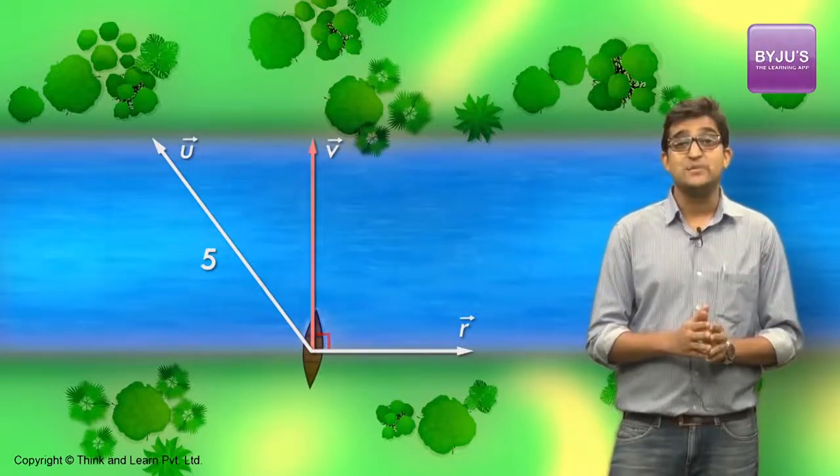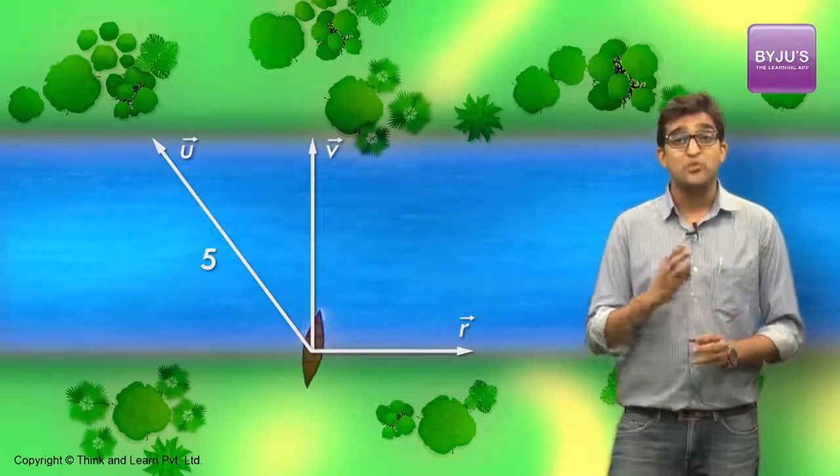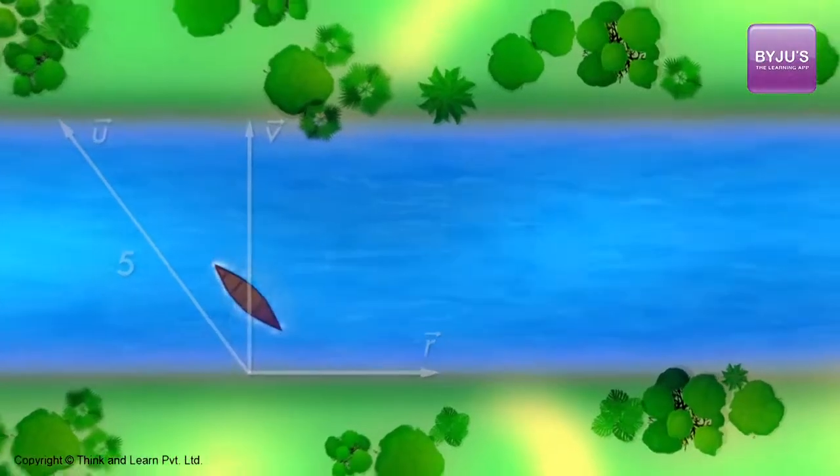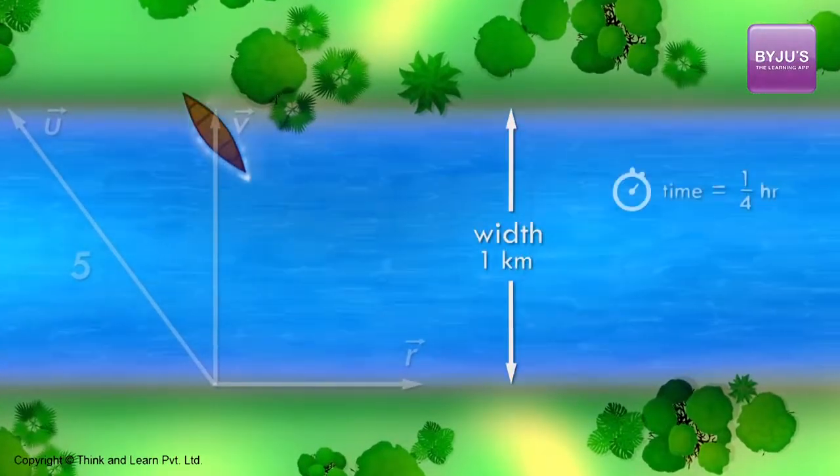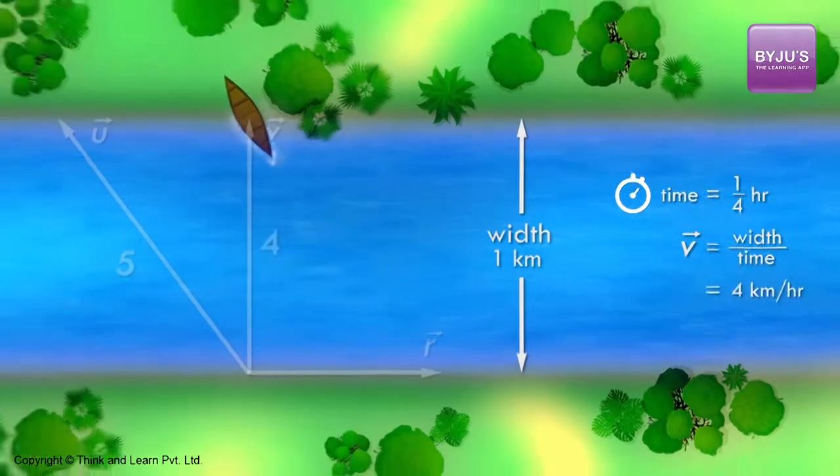To make the resultant speed perpendicular to the river flow, the boat should start moving in this direction. It is given that the boat finally crosses 1 km width in one-fourth of an hour. Hence, the resultant speed will be 4 km per hour.